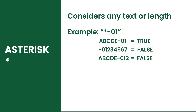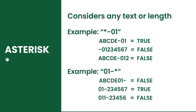The asterisk is used to replace any number of characters. For example, if you use asterisk-dash-01, it will recognize all values that end with dash-01. On the other hand, if you use 01-dash-asterisk, it will recognize all values starting with 01-dash.